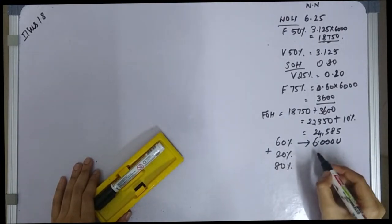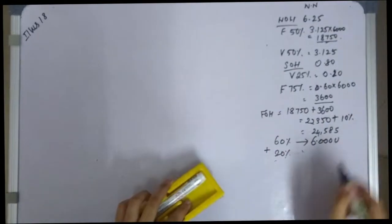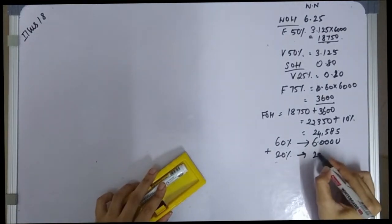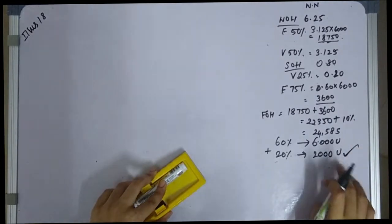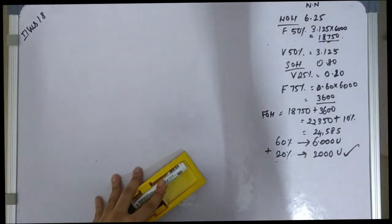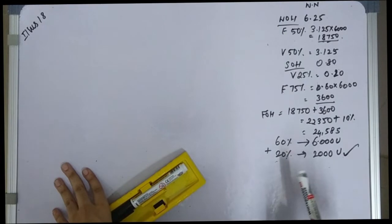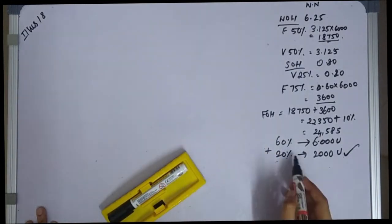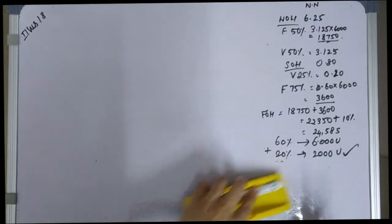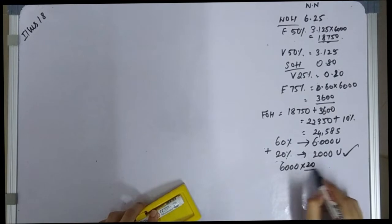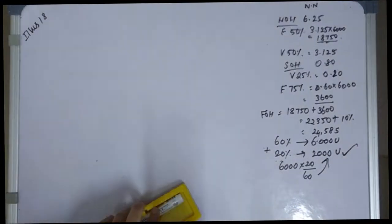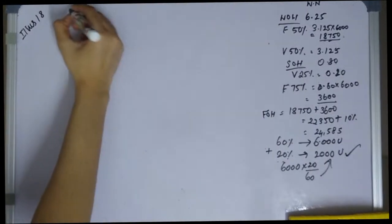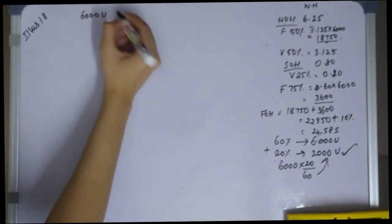The correct way to calculate the additional units: since 6,000 units is 60% of capacity and the offer is for a further 20% of capacity, we multiply 6,000 by 20 divided by 60, which gives us 2,000 units. So the additional order is for 2,000 units — this is the right calculation method.